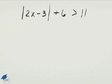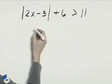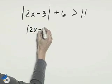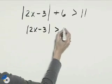To solve this absolute value inequality, we first need to move 6 to the right-hand side by subtracting. That will give us the absolute value of 2x minus 3 is greater than 5.